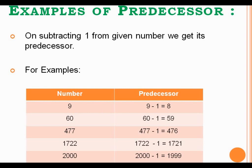Same way, suppose if we want to find out the predecessor of 60, we have to subtract 1 from the given number 60, so we get 59. So, 59 will be the predecessor of number 60.